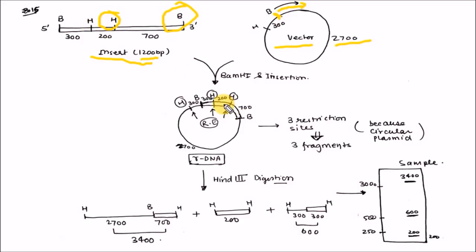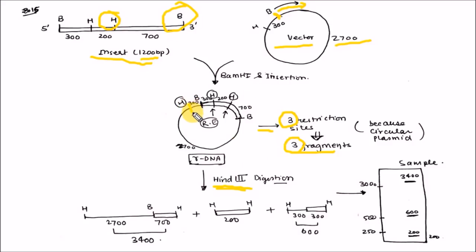If you do restriction digestion with HaeIII, you will get three fragments because there are three HaeIII restriction sites present in this circular DNA. Cutting at all three sites gives fragments of 600 bp, 200 bp, and 700 + 2700 = 3400 bp. So the three fragments generated are 3400 bp, 600 bp, and 200 bp.